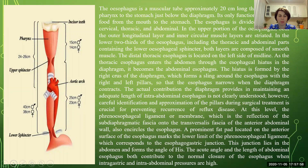The esophagus is a muscular tube approximately 20 centimeters long, with the main function of transportation of food from the mouth to the stomach. The esophagus is divided into three main parts. In the upper portion, both the outer longitudinal layer and inner circular muscular layers are striated. In the lower two thirds of the esophagus, including the thoracic and abdominal parts, both layers are composed of smooth muscles.